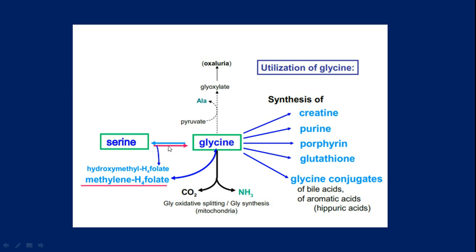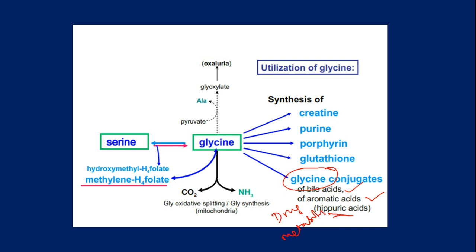To summarize glycine metabolism: serine gives us glycine as one source; the second source is from carbon dioxide, ammonia, and one mole of methylene-loaded folate. Glycine can react with pyruvate to give glyoxylate, resulting in formation of oxalates — a toxic reaction. Glycine is used for biosynthesis of creatinine, purines, porphyrins, glutathione, and glycine conjugates. Glycine conjugates are seen in biosynthesis of bile acids and aromatic acids like hippuric acid, and also in phase 2 drug metabolic reactions where conjugations happen.